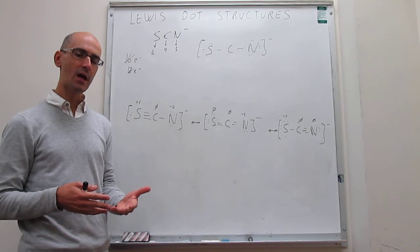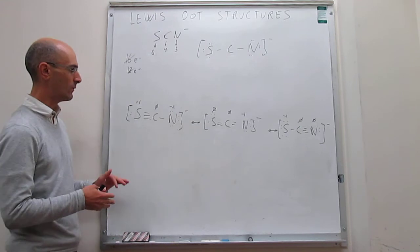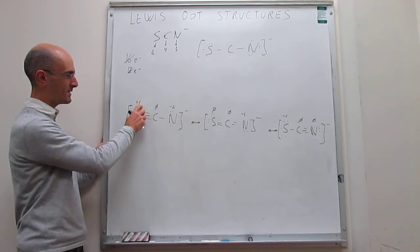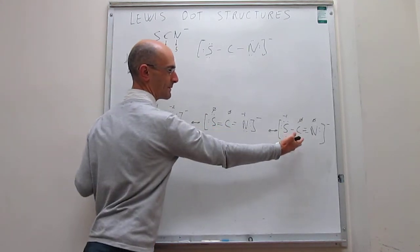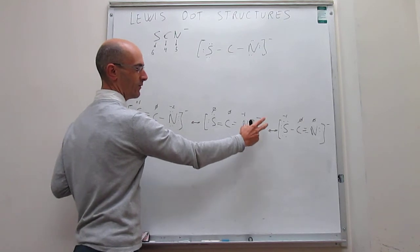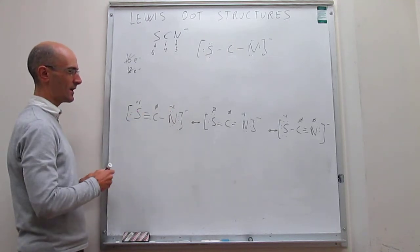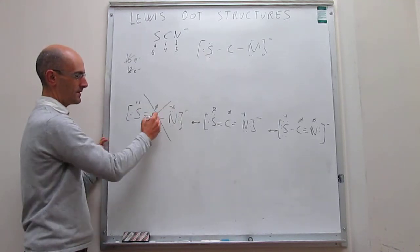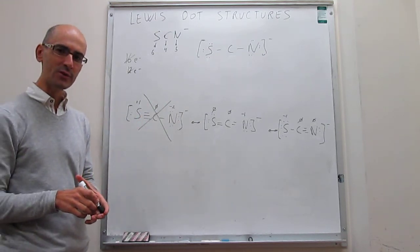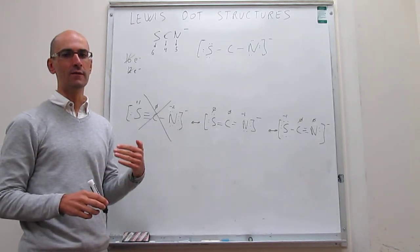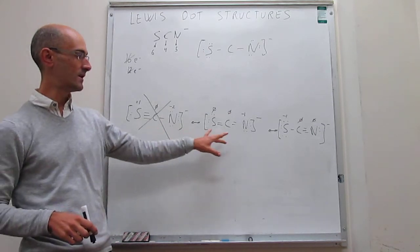The best Lewis dot structures are those that have the lowest possible formal charges. The first structure has formal charges of plus one and minus two — those are really large compared to the other structures in which most atoms have a zero formal charge. So we can say this first structure is actually not going to participate much in reality, because the formal charges are too large. Successful Lewis dot structures are those that have formal charges of either zero or plus/minus one for most atoms.